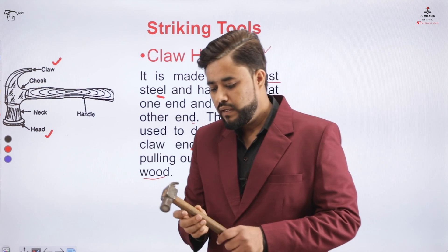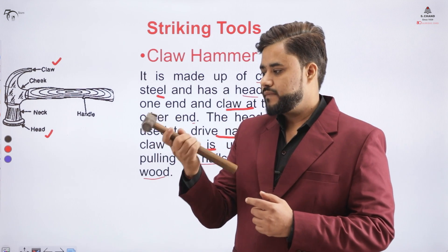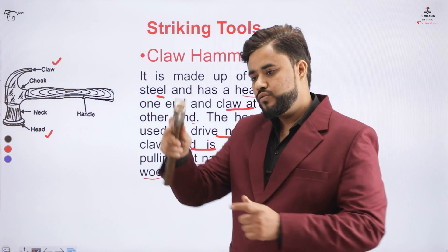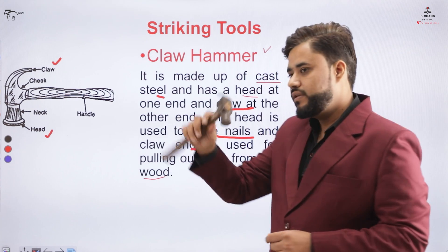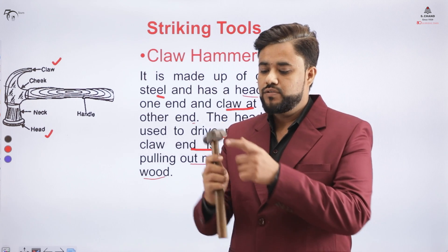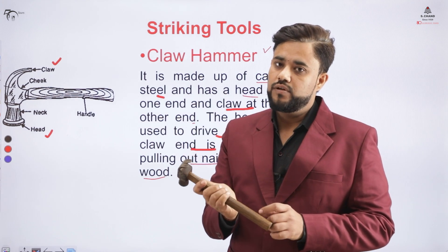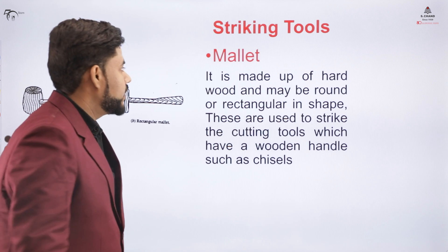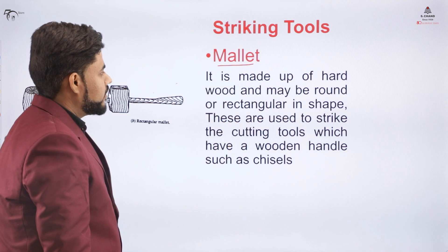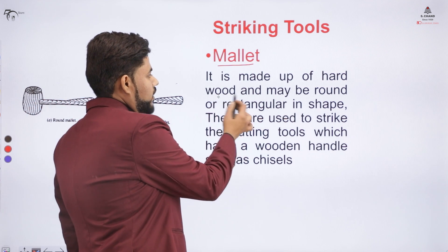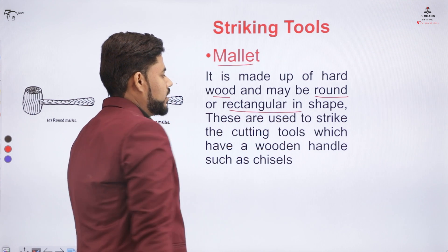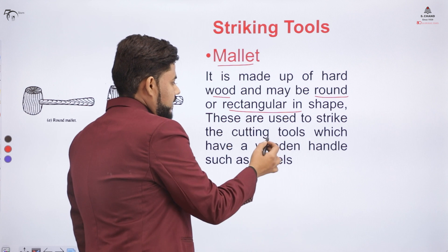This tool is called a claw hammer. On one part you have a head used to drive in nails on the surface of the wood, and the other part is the claw used to expel nails from the surface of the wood. The mallet is the other category of striking tool, basically made up of hard wood in a round or rectangular shape, and it is used to strike cutting tools.